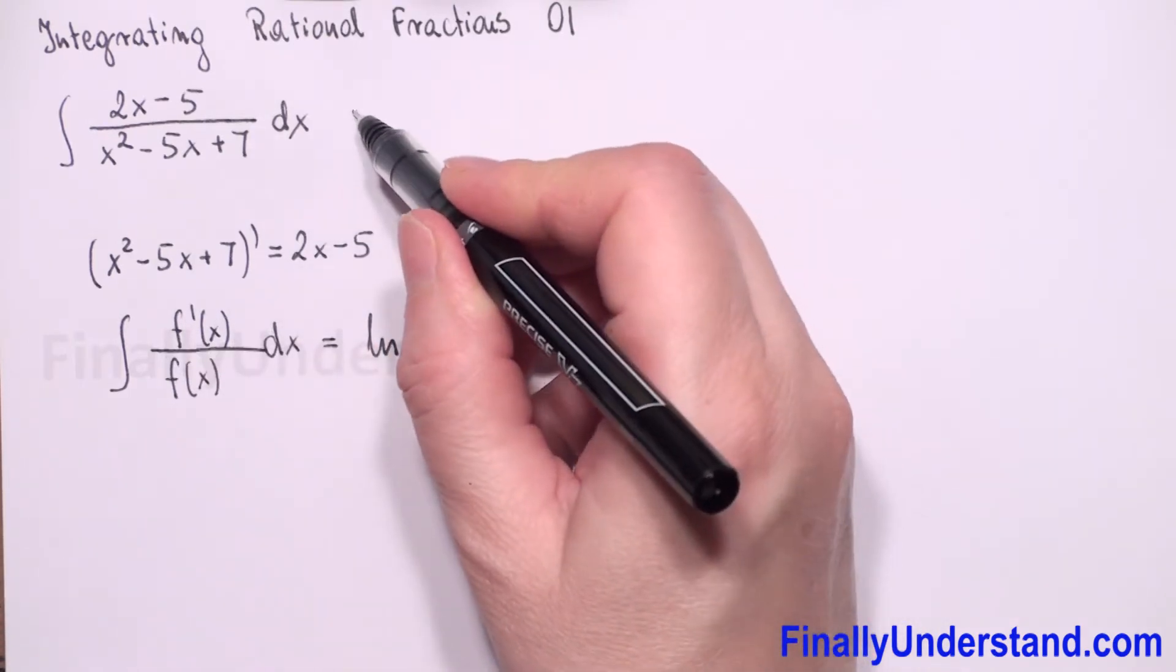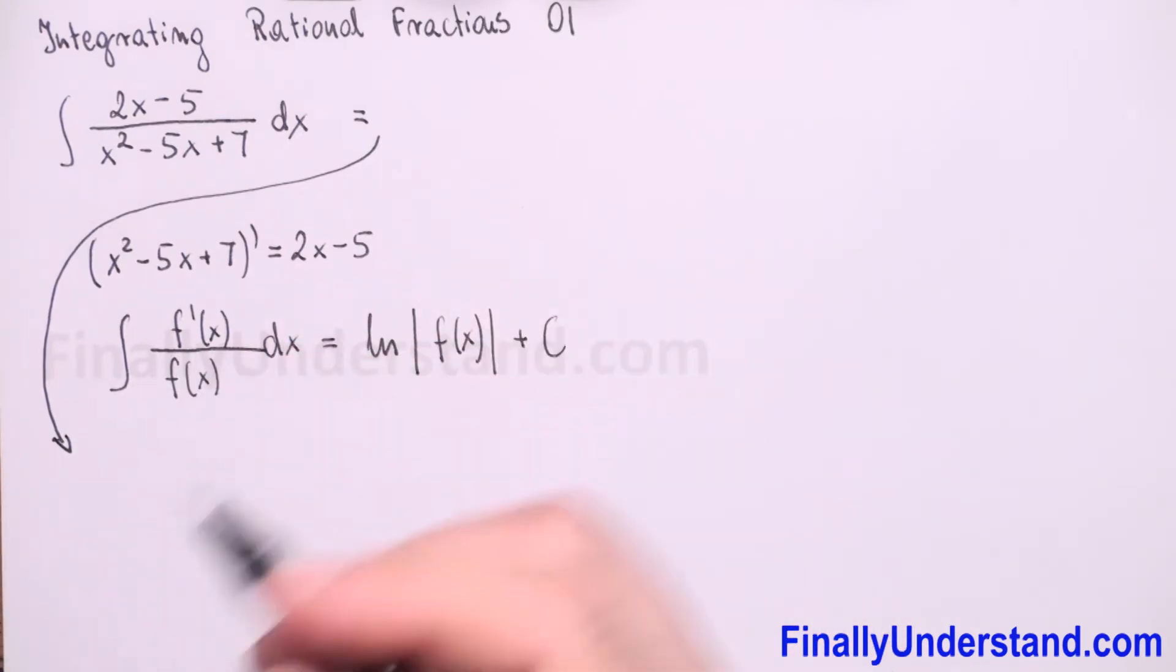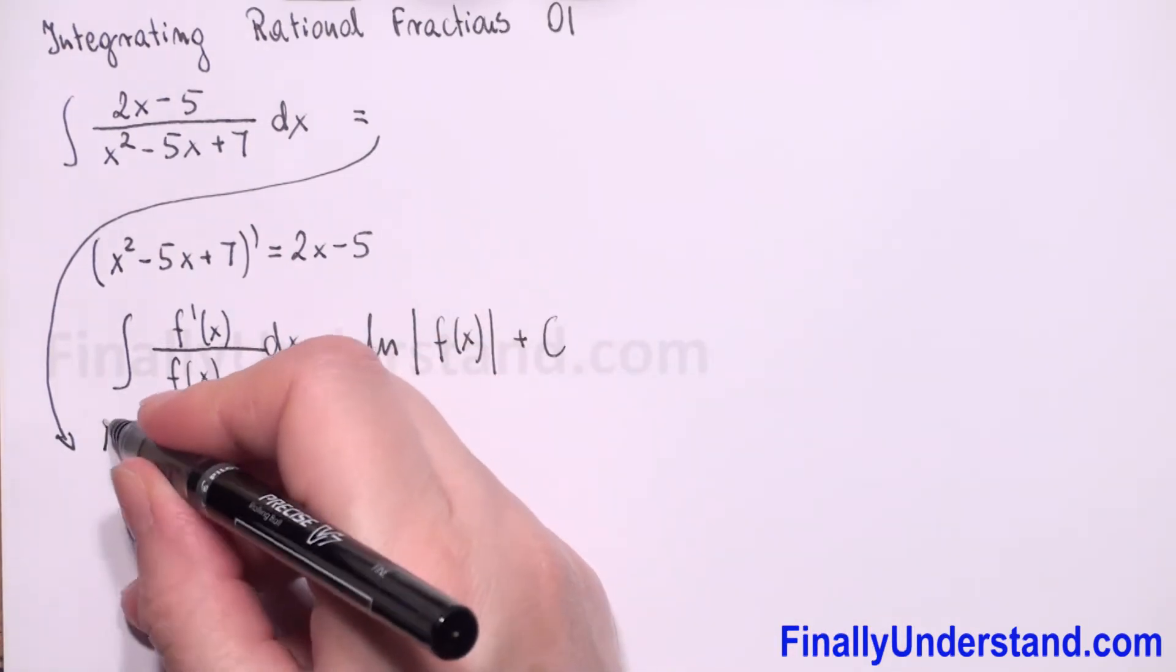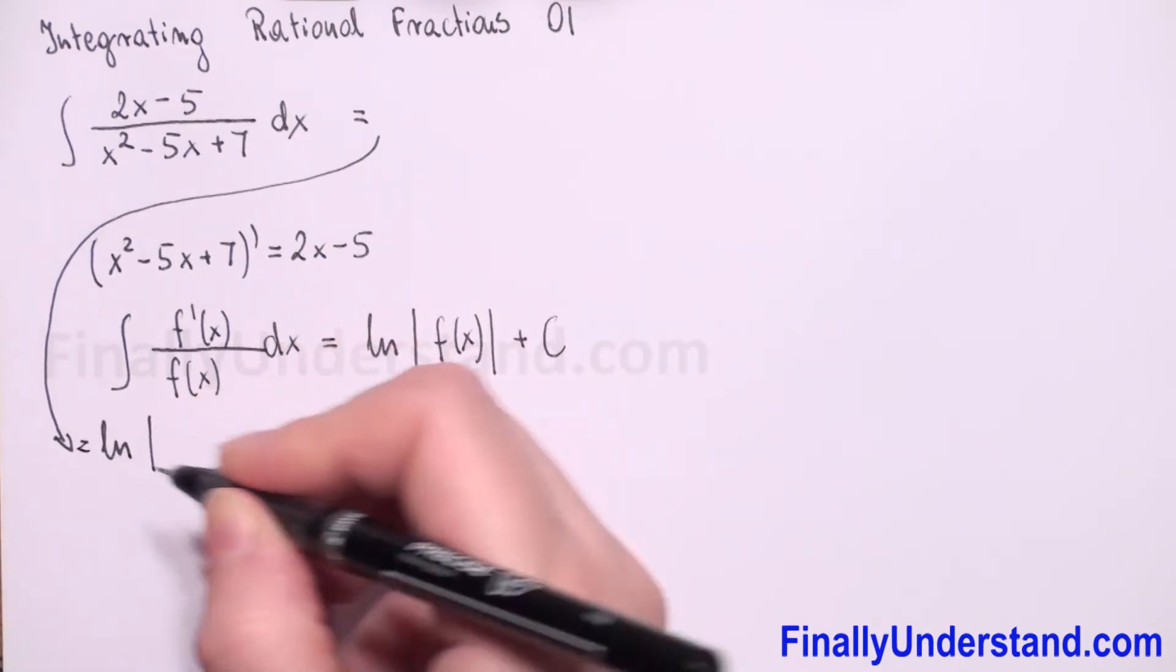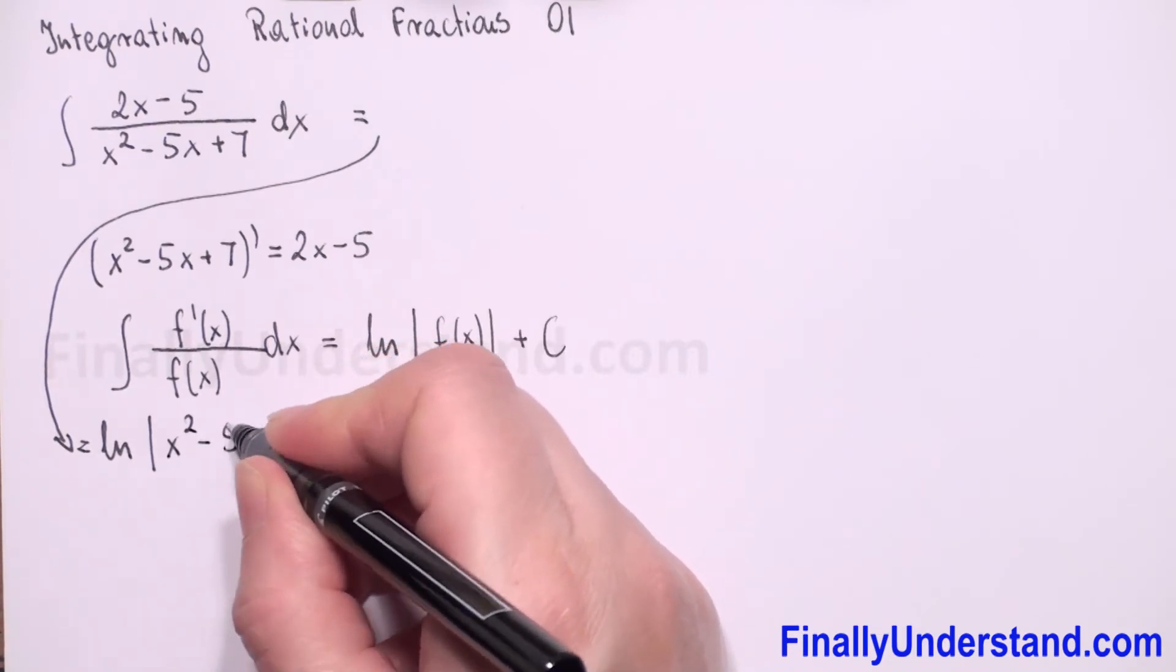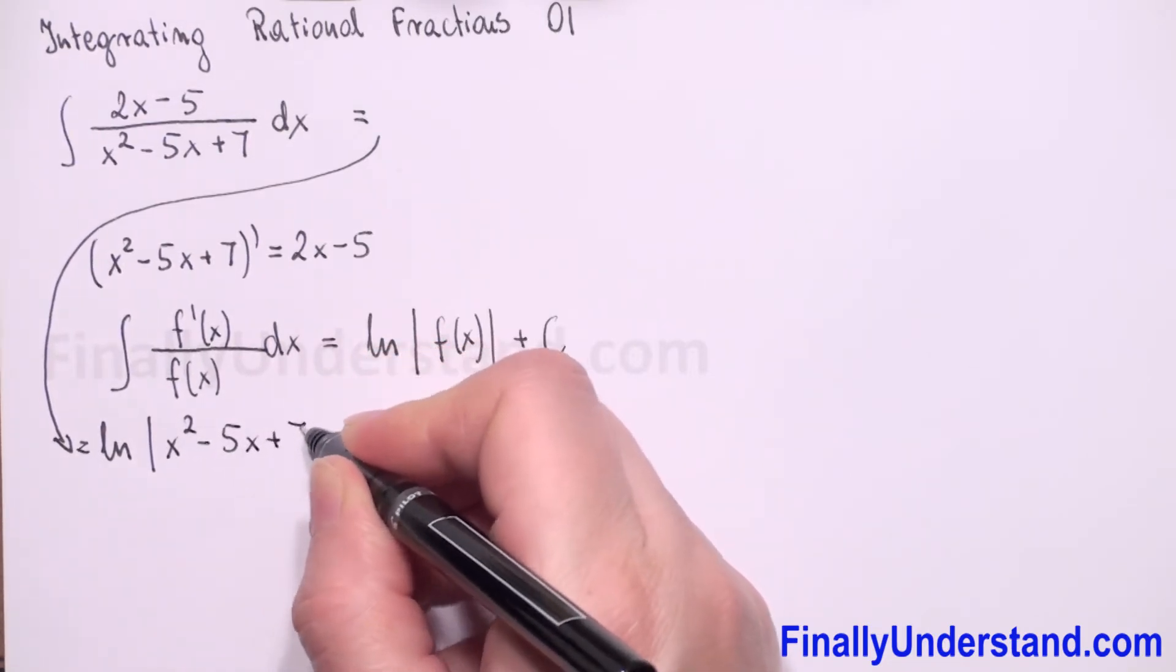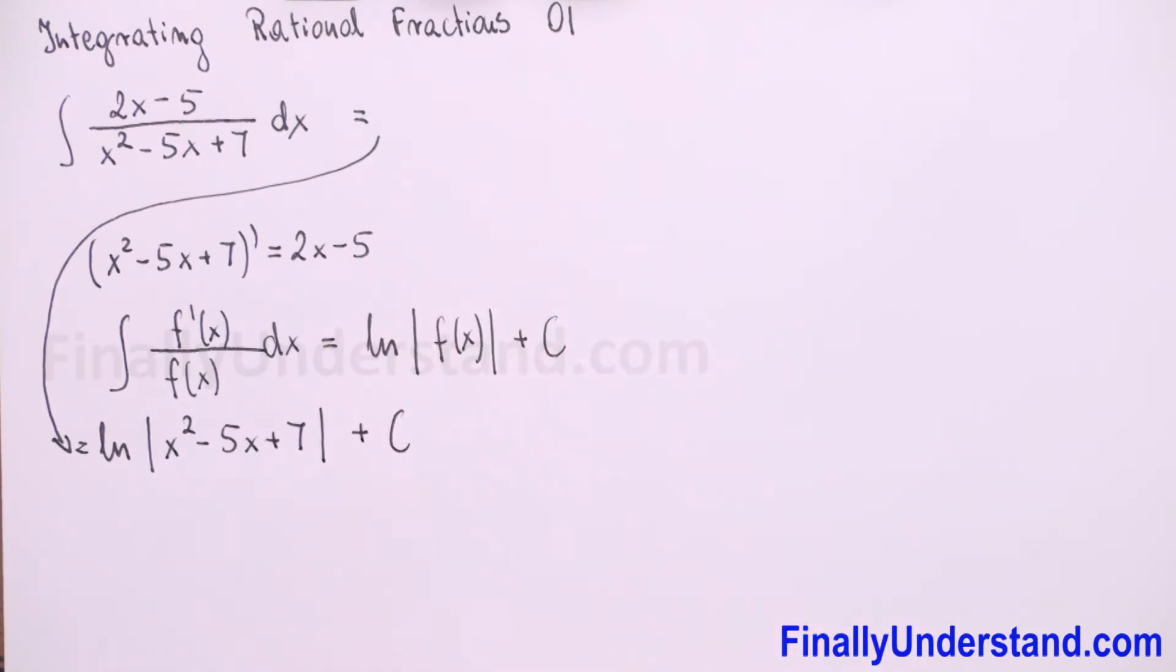So we can rewrite that our integral is equal to natural logarithm of absolute value of x square minus 5x plus 7 plus constant c. What else?